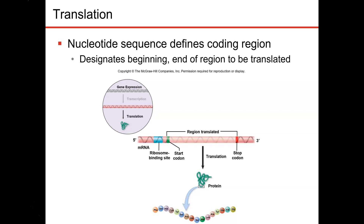Now we're going to get into how translation occurs. The nucleotide sequence in the RNA — the messenger RNA — is going to determine what region of the messenger RNA is actually going to be translated. We have a region where the ribosome binds, then we have that start codon and we have that stop codon. This region between the start and the stop codon is what's going to actually be translated.